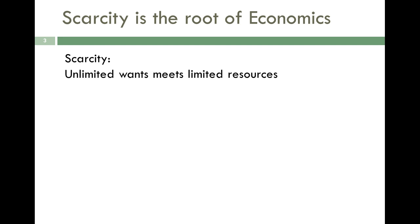So what is scarcity? A good definition is unlimited wants meets limited resources. The idea is that producers, consumers, whatever group we're looking at in the economic world, we all have unlimited wants. But we have to decide which ones we can actually satisfy because our resources are not unlimited. You can prove this to yourself quite easily — you can make a list of things you'd like to buy right now, and that list is going to be a little longer and more expensive than your current budget would allow.